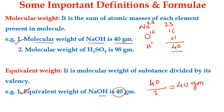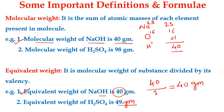For sulfuric acid, the equivalent weight is 49 grams. In H2SO4, two hydrogen atoms are donated, so the valency is 2. Therefore, 98 divided by 2 gives 49 grams. In this way, molecular weight and equivalent weight are calculated.